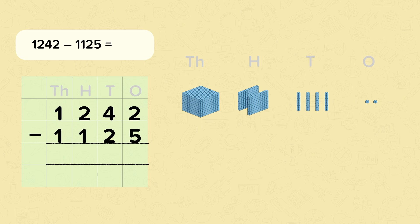Now let's have a go at this calculation: one thousand two hundred and forty-two subtract one thousand one hundred and twenty-five. So as before we're going to start at the ones. We've got two and we need to subtract five, but we can't do that. So what we need to do is exchange.